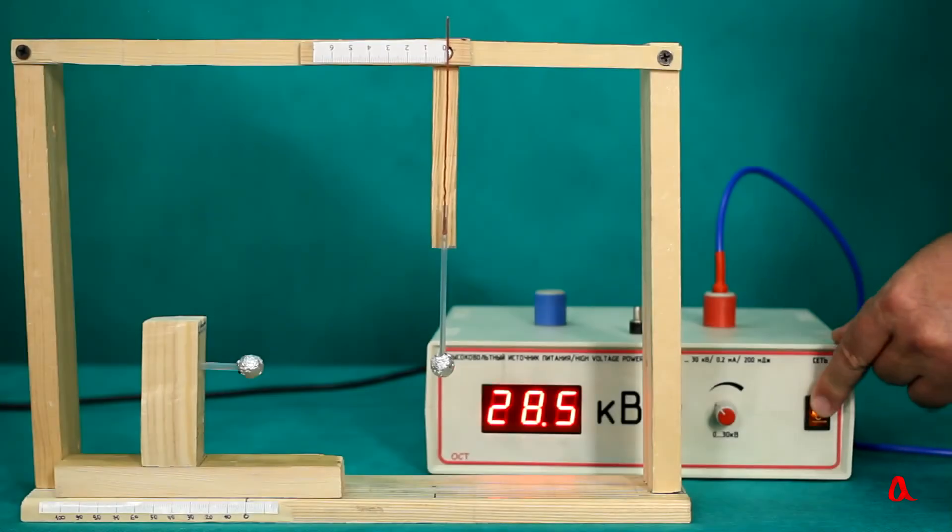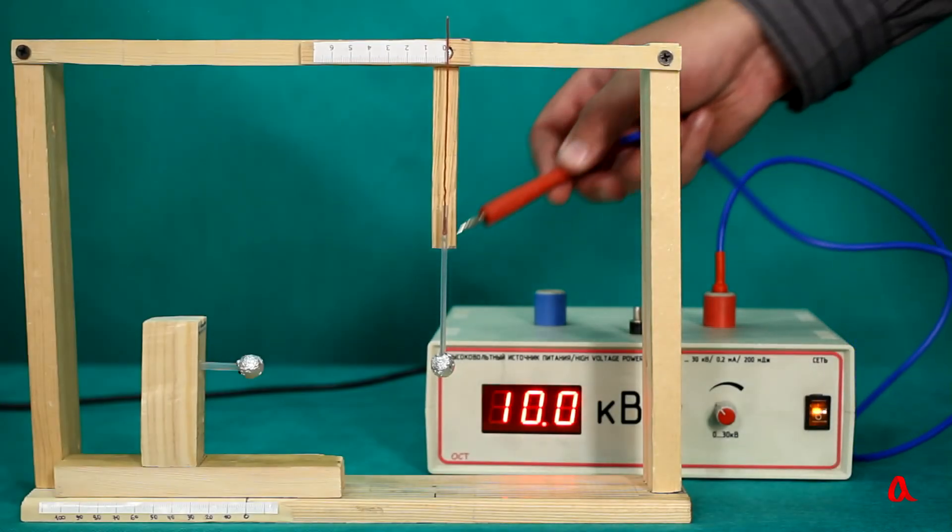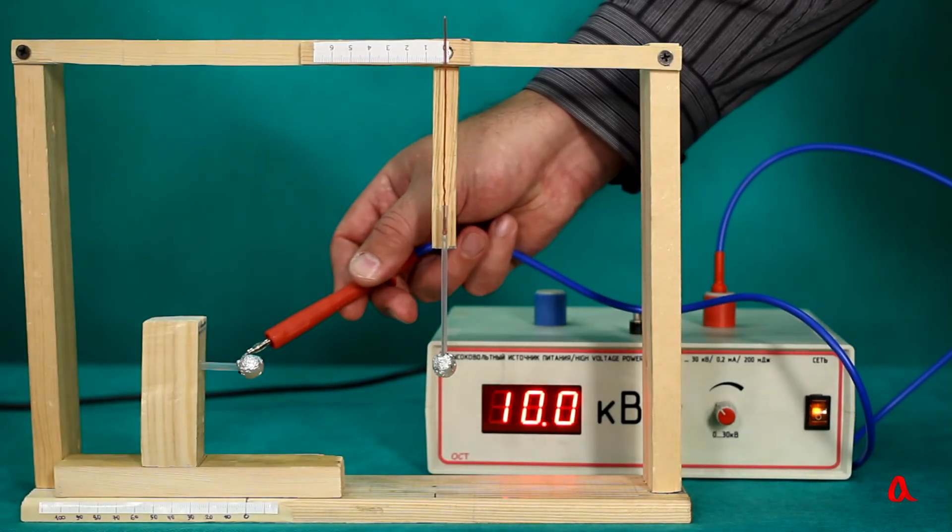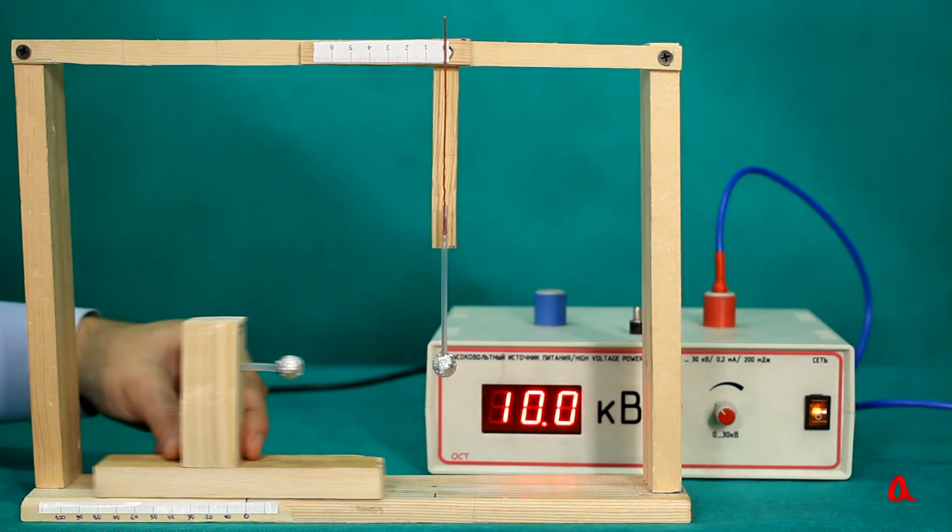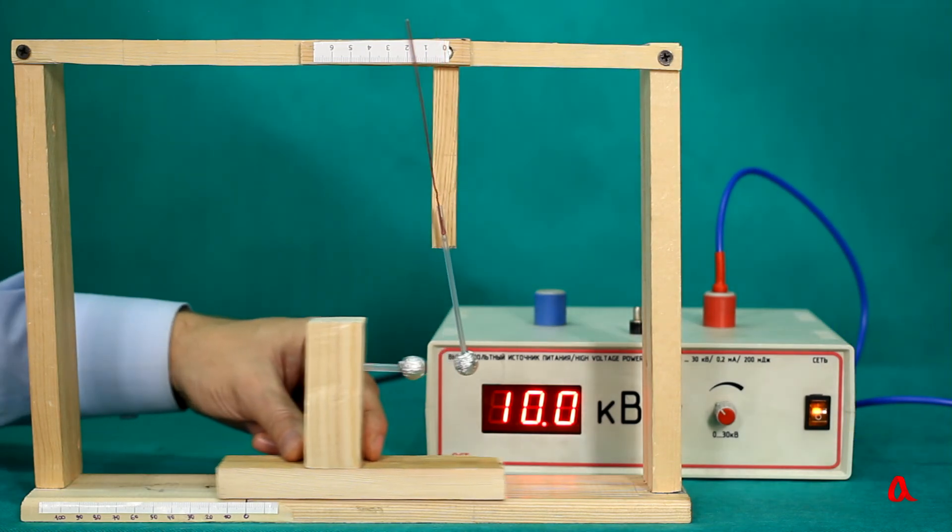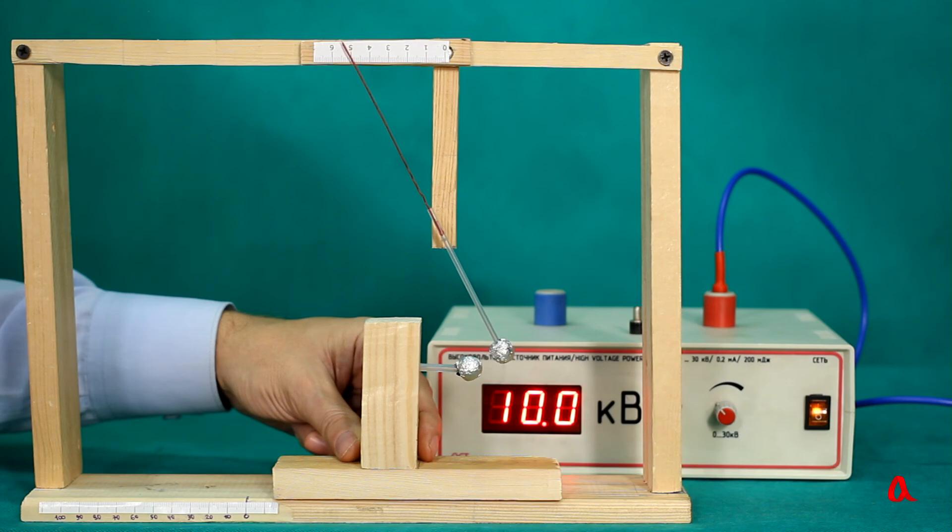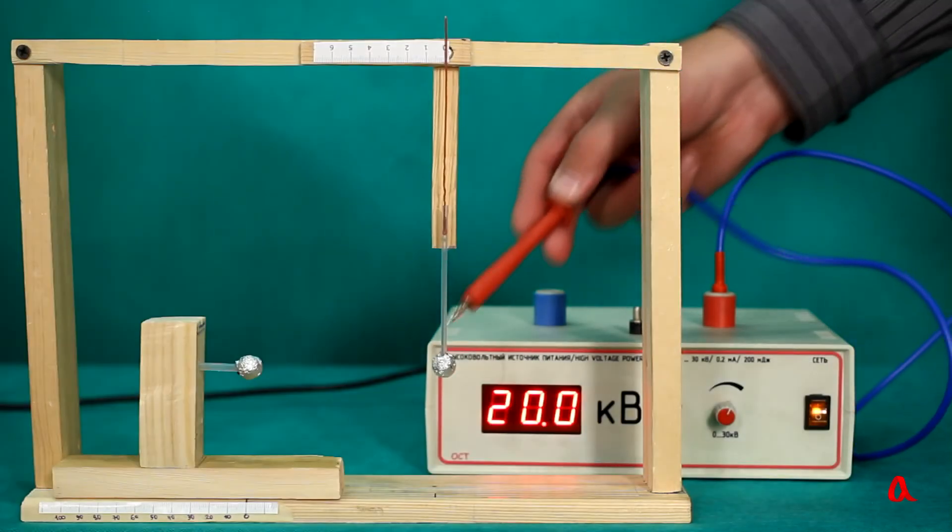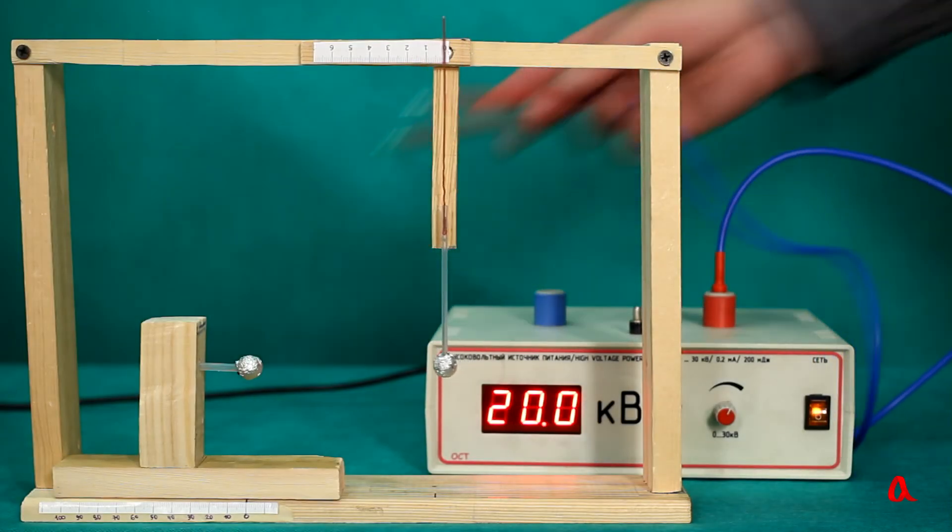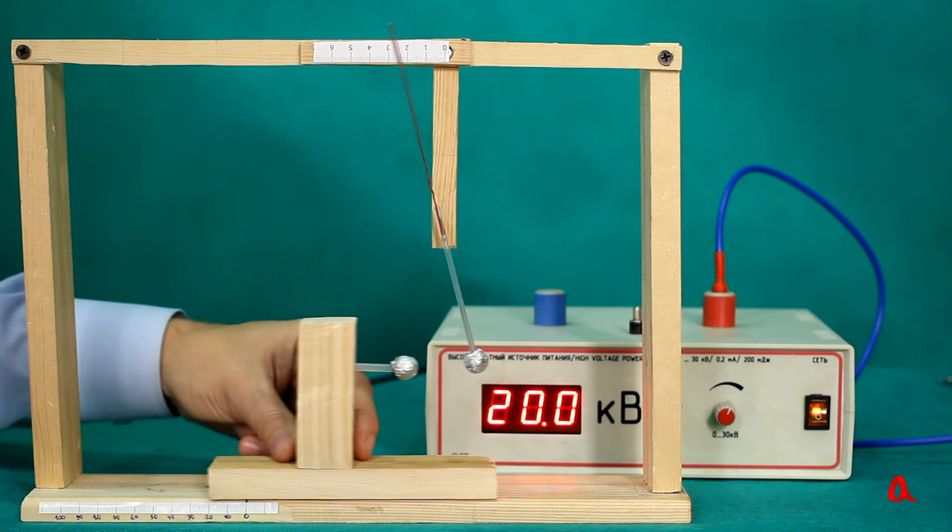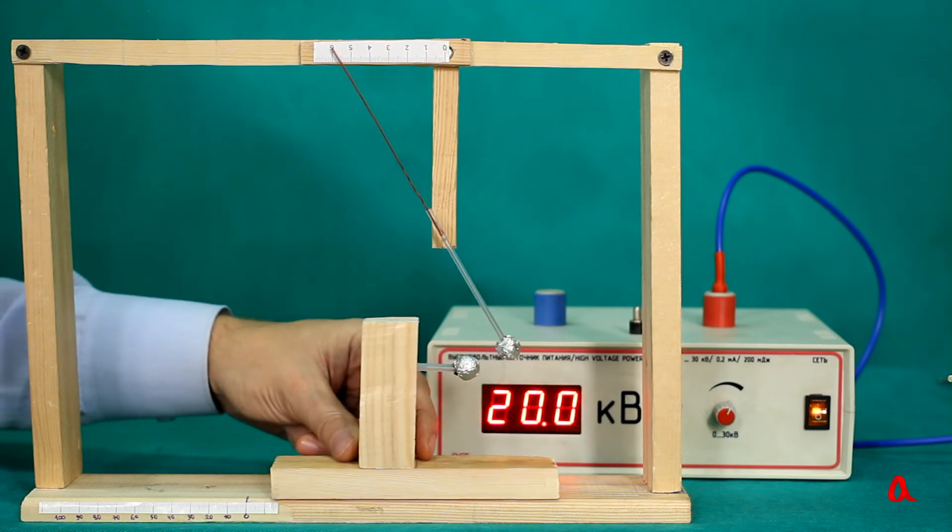Let us charge the balls with a voltage of 10 kV, and measure how the force of their interaction depends on the distance between them. Now we will double the voltage to 20 kV. At the same time, the magnitude of both charges will double. Now we will repeat our experiment once more.